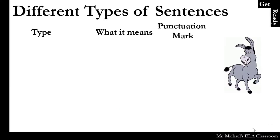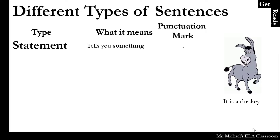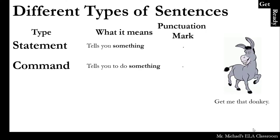So, different types of sentences. A statement sentence tells you something and ends in a full stop or period. For example: "It is a donkey." A command sentence tells you to do something and ends in a full stop or period. For example: "Get me that donkey."